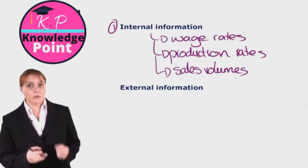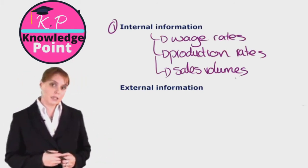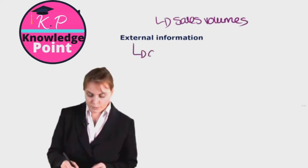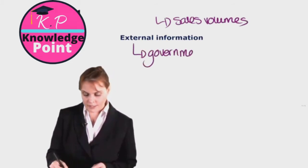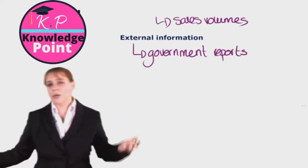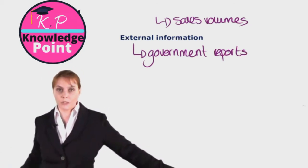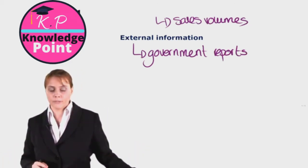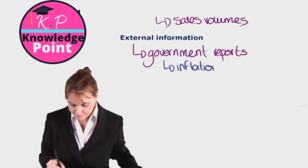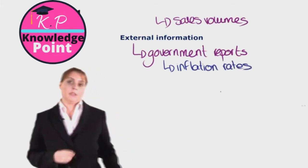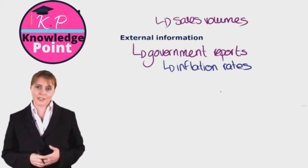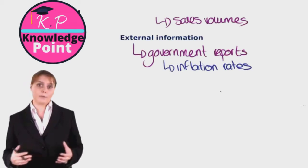However, we may also source information externally. One of our key sources of external information would be government reports and statistics. What might be included in government reports that would be of interest to us as we run our company? The first thing I would suggest is inflation rates — very important, in particular as part of our budgeting process, for us to understand how much our prices are likely to go up or down.